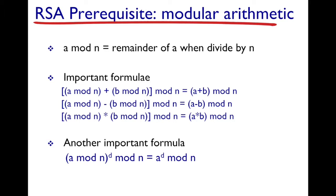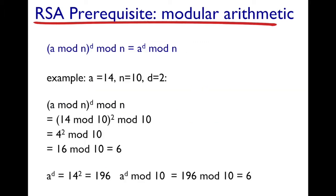Let's try to understand this formula with an example. Let's assume a is 14, n is 10, and d is 2.